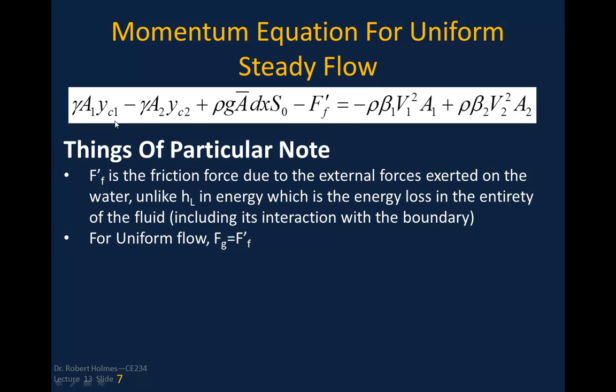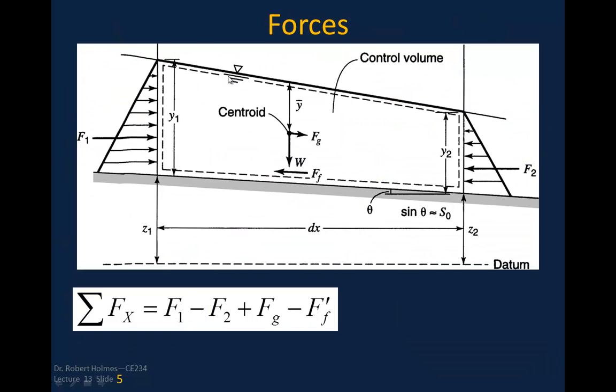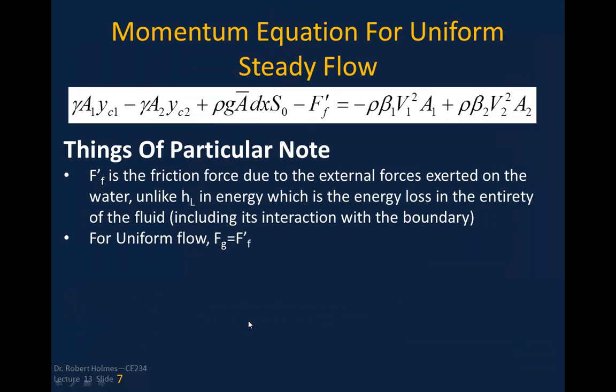If we replace those forces that were in the original equation back here, if we replace those forces with what we actually derived just now, we show this up on the left side, and then this is basically the momentum fluxes across those boundaries. The F sub prime F is the friction force through the external forces exerted on the water.